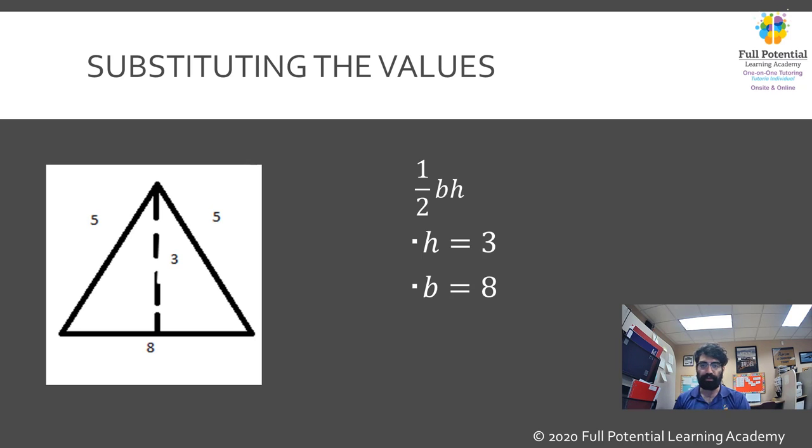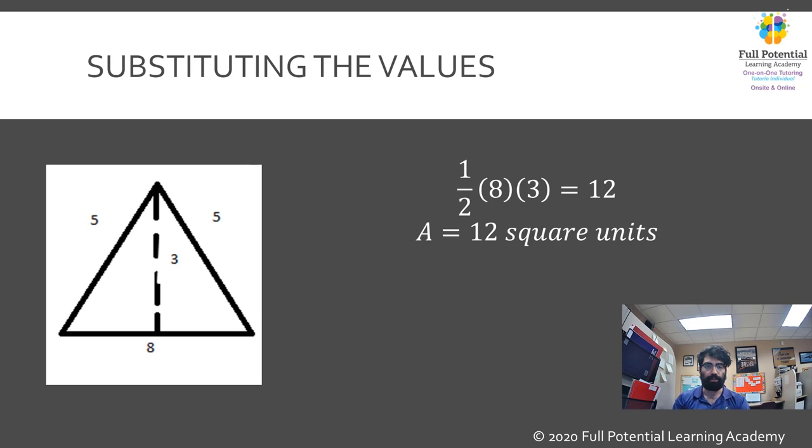Using the formula one-half bh and then replacing b and h with 8 and 3 respectively, we can calculate the area of the triangle to be one-half times 8 times 3, which equals 12. Therefore, the area of this given triangle would be 12 square units.